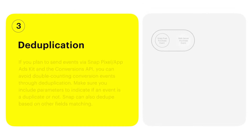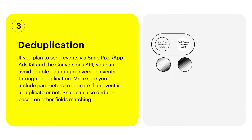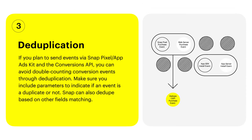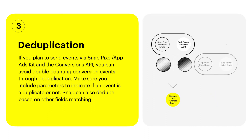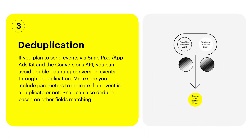Deduplicate events. If you plan on sending events via Snap Pixel and/or the AppAdsKit, in addition to the Conversions API, you can avoid duplicate conversion events through deduplication. Instructions on the Snapchat Marketing API page share how to include parameters that indicate if an event is a duplicate or not.